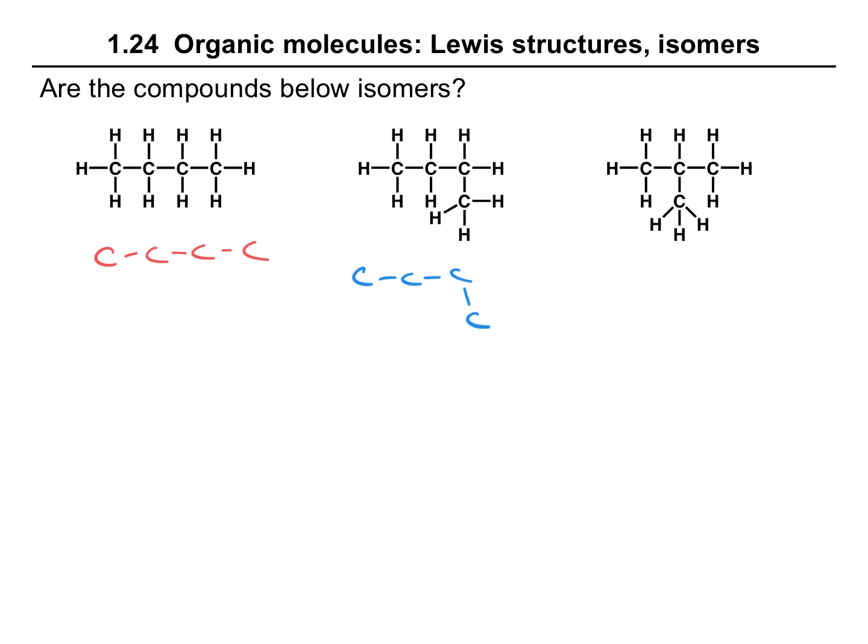If we look at our third example, now we have carbon connected to carbon, connected to carbon, and this central carbon is connected to another carbon. And so here we have different connectivity. This central carbon is connected to three carbons, whereas in either of these representations, we don't have any single carbon that's connected to three other carbons. So here we do have different connectivity, and so this is a constitutional isomer of these.